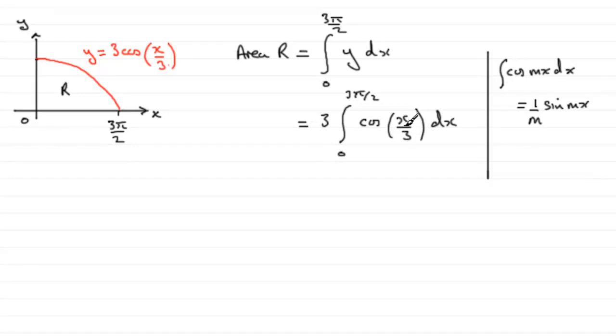Well, m in this particular instance is going to be 1/3, so we end up with the 3 here, and then it's multiplied by 1/(1/3), 1 over m with m being 1/3 here, sine of x/3, and that's going between 0 and 3π/2.